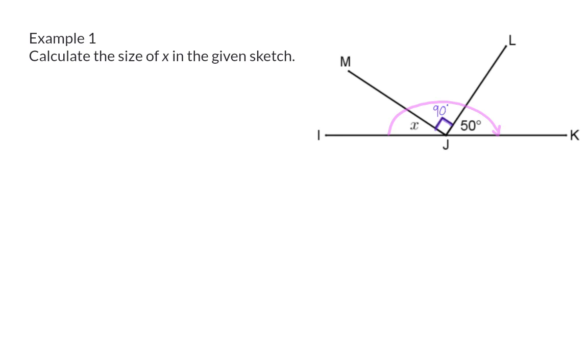In geometry, it is especially important to always be able to supply a reason for whatever statement you are making. So in this case, if I say x + 90 + 50 degrees = 180, the reason I'm going to supply is angles on a straight line.